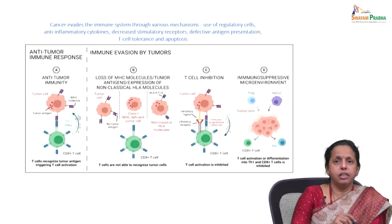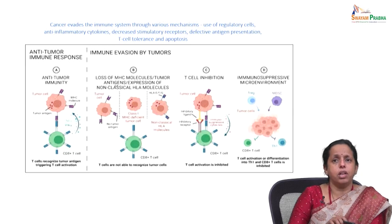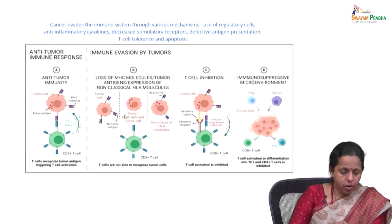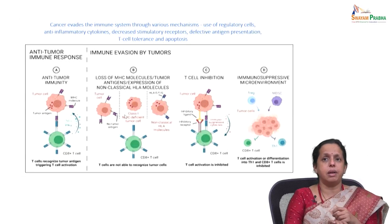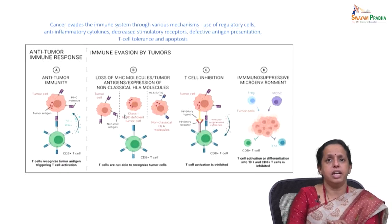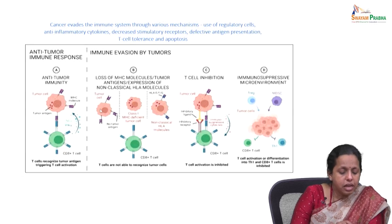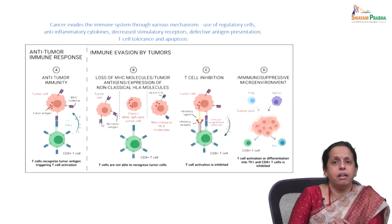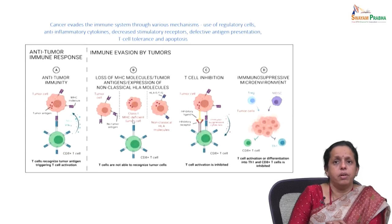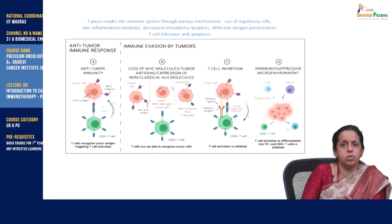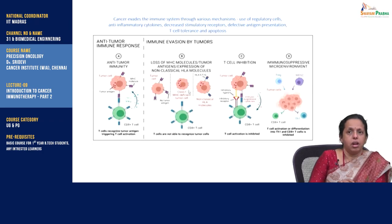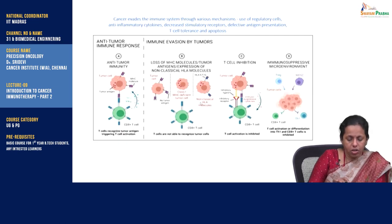T cell receptors recognize antigens presented only by MHC molecules. MHC class I can be downregulated on tumor cells, meaning CD8 T cells cannot recognize tumor cells. Furthermore, loss of antigen variants on tumor cells leads to failure of tumor recognition by CD8 T cells. Non-classical HLA molecules also prevent T cell recognition due to loss of variant expression.